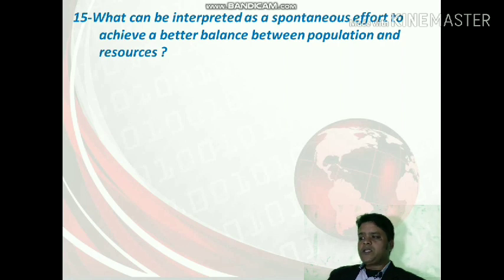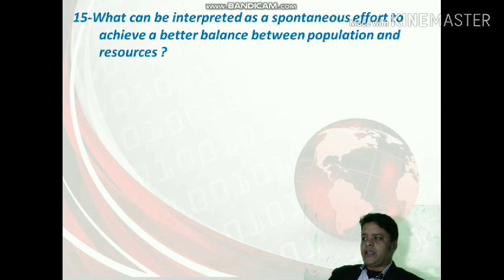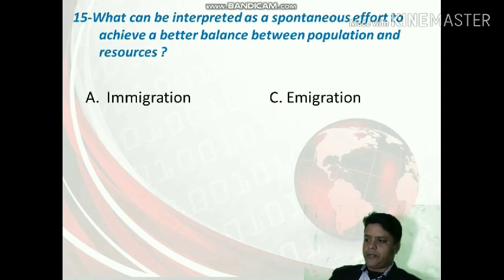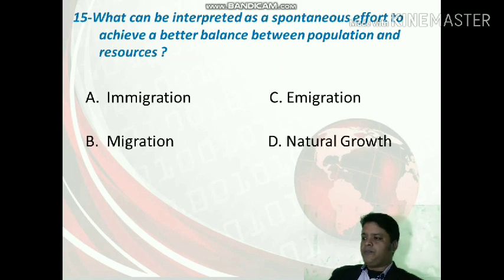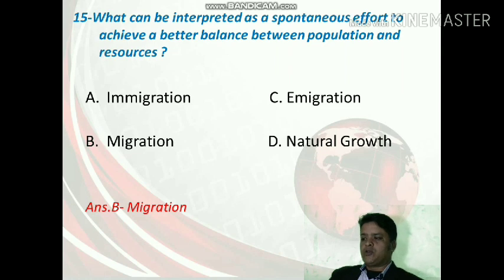What can be interpreted as a spontaneous effort to achieve a better balance between population and resources? The options are emigration, emigration again, migration, or natural growth. The correct option is migration — migration is how a balance can be achieved between population and resources.